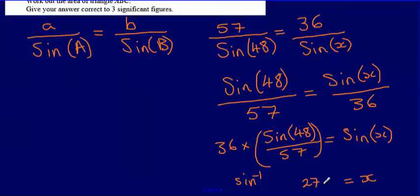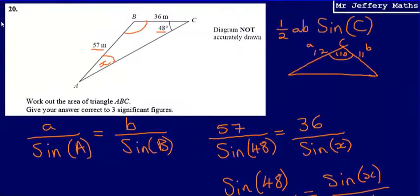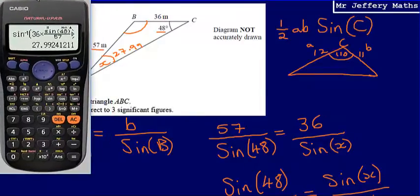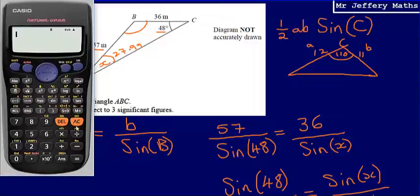Which means that if I know that this is 27.99, I can now work out what that angle there is going to be. And once I've figured out this angle here, I've then got a situation where I've got two lengths which trap an angle, and I can use my half AB sine C. So what I'm going to say, and I'm going to keep this all in the calculator now, what I can say is that this angle here is going to be 180 minus 48 minus the answer that I just figured out, 27.99. So that gives me 104.0075879. So that is that angle there.